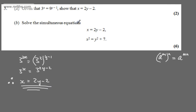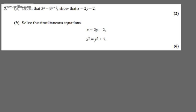In part B, we're asked to solve the simultaneous equations. x equals 2y minus 2 and x squared is equal to y squared plus 7. The question carries six marks. I'm going to rewrite the equations. I'm going to call the top one number 1 and the bottom one number 2.